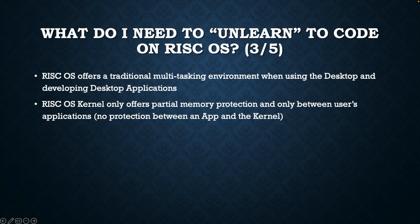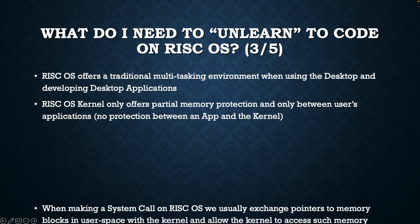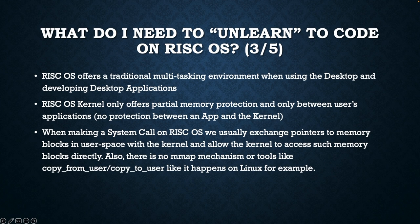RISCOS kernel only offers partial memory protection, and only between user applications. In other words, a user application cannot access the memory space of another user application. However, there is no protection between a user application and the kernel and vice versa. When making a system call on RISCOS, we usually exchange pointers to memory blocks in user space with the kernel and allow the kernel to access such memory blocks directly. There is no memory mapping mechanism or tools like copy_from_user or copy_to_user as happens on the Linux kernel, implemented by default.